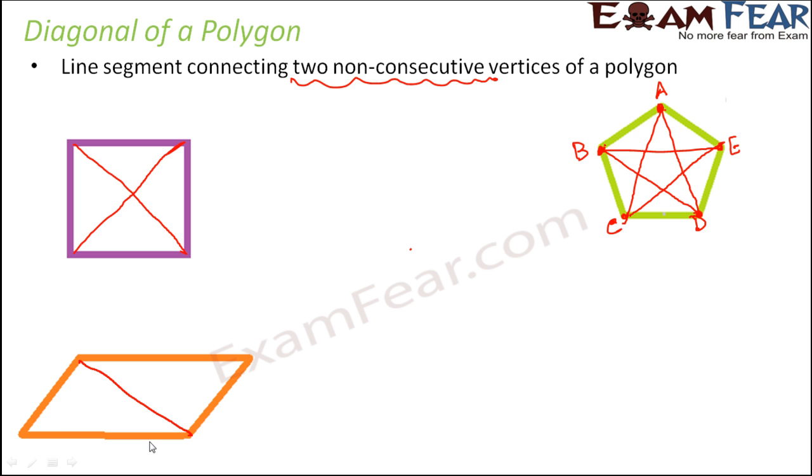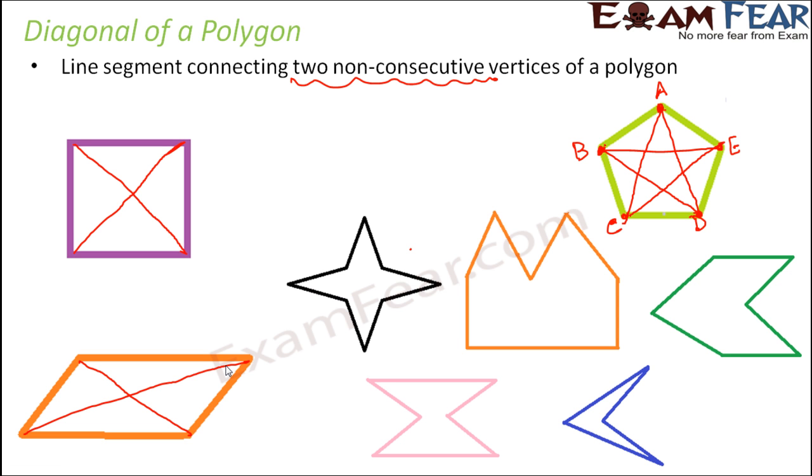Similarly here also this is one possible diagonal. This is another possible diagonal. You cannot draw more than these. Now you can try drawing diagonals for all of these polygons. Now they are all polygons with multiple number of sides. So try to draw diagonals for all of them. That would not only help you to practice but also help you in better understanding of diagonals.